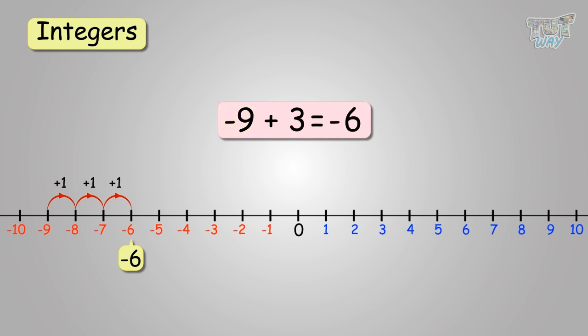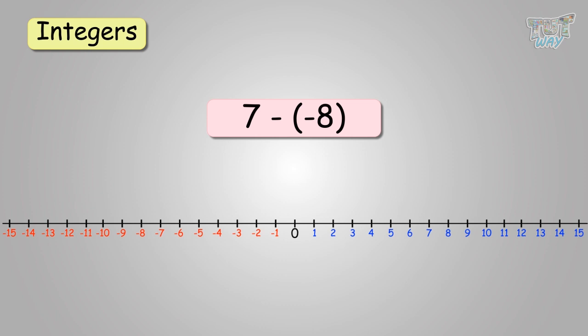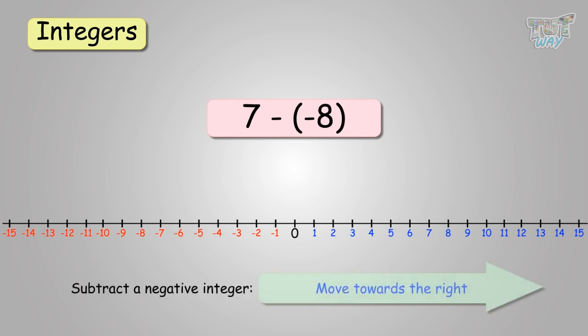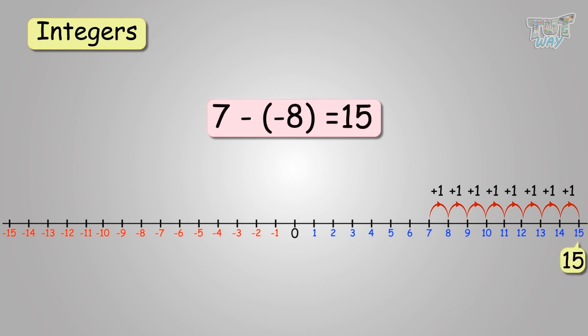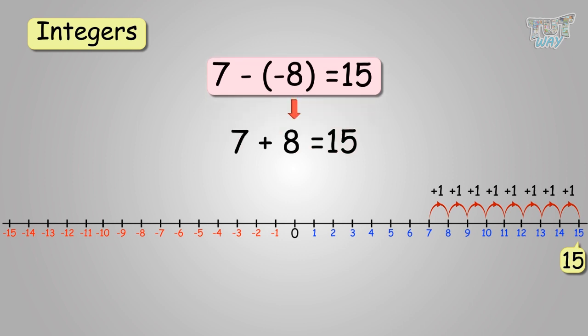Another sum. We have to subtract negative 8 from 7. We learned that whenever we subtract a negative number, we move towards the right. So, start at 7, and then move 8 places towards the right: 7 to 8 to 9, then 10, 11, 12, 13, 14, and then finally stop at 15. So, we move 8 places towards the right of 7. The answer will be 15. Also, 7 minus negative 8 is the same as 7 plus 8. Whenever two negative signs come together, they become a plus sign. So, 7 plus 8 equals 15.